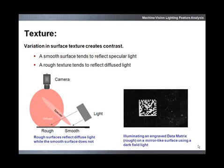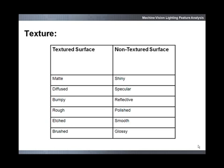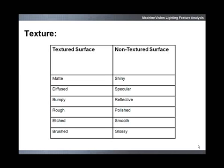If a bright field light were to be used — a light coming down from the top — the etched feature would become inverted and appear dark against a bright reflective background. Here are some examples of textured and non-textured surfaces that would generate contrast against each other. Consideration of texture is important in choosing a proper light source, and is also very useful when designing a part that requires marking or will have a traceable feature of interest.